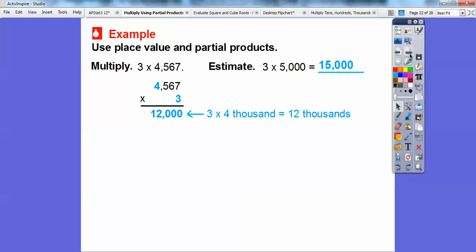So let's multiply 3 times the 4,000. 3 times 4,000 is 12,000. Now we're going to multiply 3 times the 500s. 3 times 500 is 1,500. Now we're going to multiply 3 times the 6 tens. The 6 is in the 10 spot. So 3 times 6 tens is 18 tens, so 18 with a zero. Finally, 3 times the 7 ones. 3 times 7 ones is 21 ones.